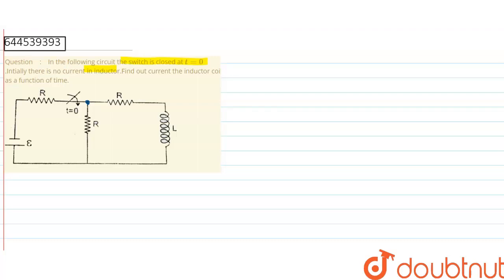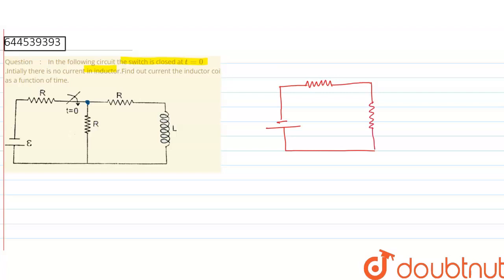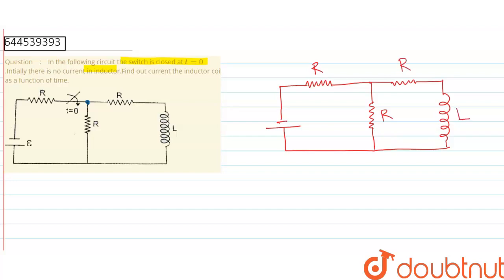How the current is passing through the conductor. So first we will draw the same as it is showing in the diagram. We can say there are three external resistors and one inductor connected to the circuit. This is R, this is R, this is also R, this is the inductor, and this is epsilon — the EMF of the source.